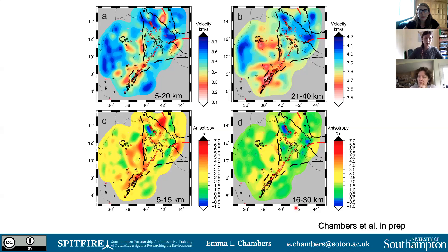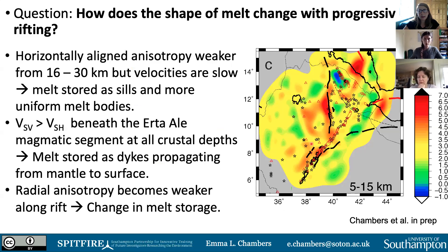Regarding stresses, there was a model by McCaffrey suggesting that in a narrow rift — such as the Main Ethiopian Rift — stresses would allow melt to be intruded as horizontal sills and also off-rift beneath the Ethiopian Plateau, whereas in the Afar region stresses were more conducive to dike intrusions without off-rift presence. That's as much as I know on the stresses — it's work in preparation and I'm still looking into the stresses further.